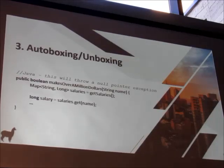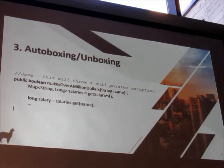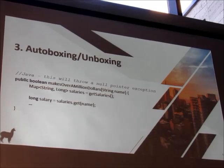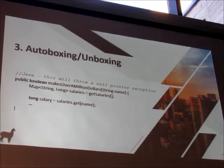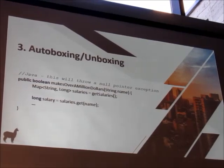Here's a cool one: autoboxing and unboxing. That's what wrapper objects do to primitive types. In this example, we're calling salaries.get(name) and it's possible that the name doesn't exist in the map. So we end up with a null value where there should have been a long, and it tries to unwrap it into a primitive long — and you get an exception there.